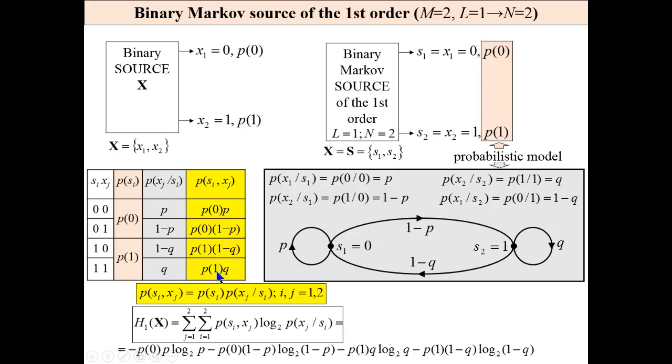In this column we have joint probabilities. We may substitute these probabilities into this formula to calculate the entropy of the source.